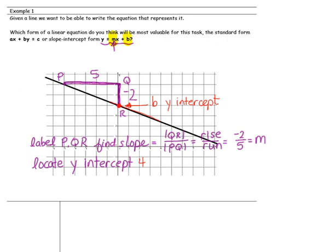Next, write your equation: y equals mx plus b. This is the slope-intercept form of the equation. We'll replace m with the slope, which is negative 2 fifths, and we'll replace b, the y-intercept, with 4. So, our equation of the line is y equals negative 2 fifths x plus 4. This is the equation of the line.